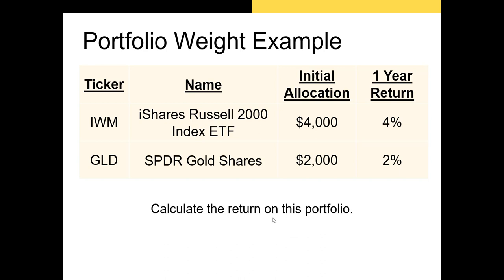Now let's calculate the return on a simple portfolio example. In this portfolio we have two securities: the Russell 2000 ETF and the SPDR Gold Shares ETF. We've initially allocated $4,000 to the Russell 2000 ETF and $2,000 to the gold ETF, and we know their returns during the year. I'm going to move over to Excel and show you how to calculate this.